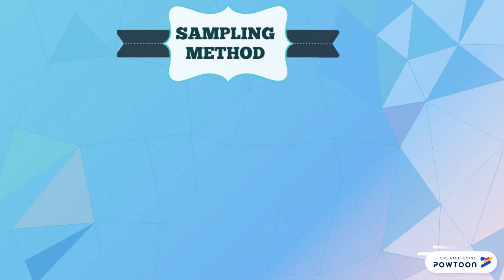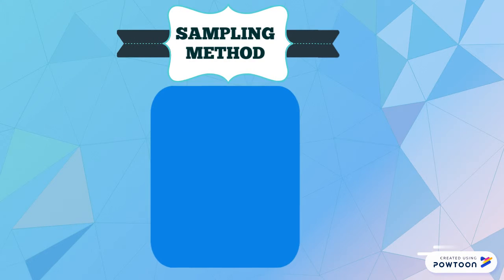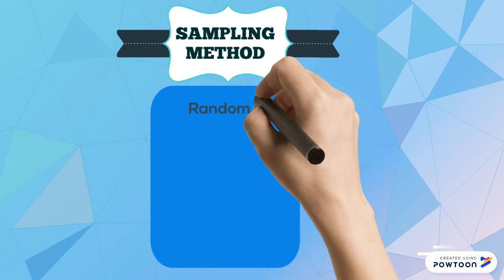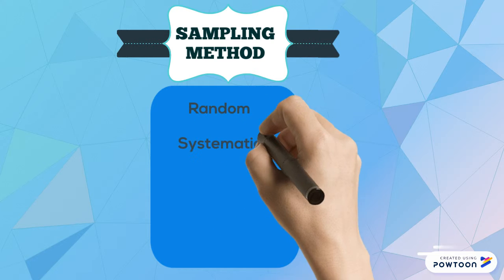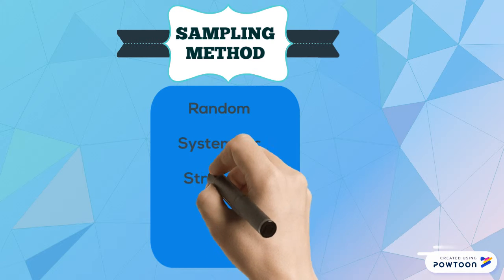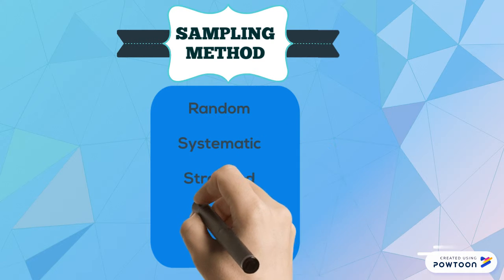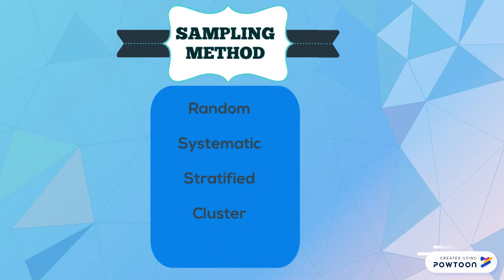There are four sampling methods. First, random. Second, systematic. Third, stratified. Fourth, cluster.